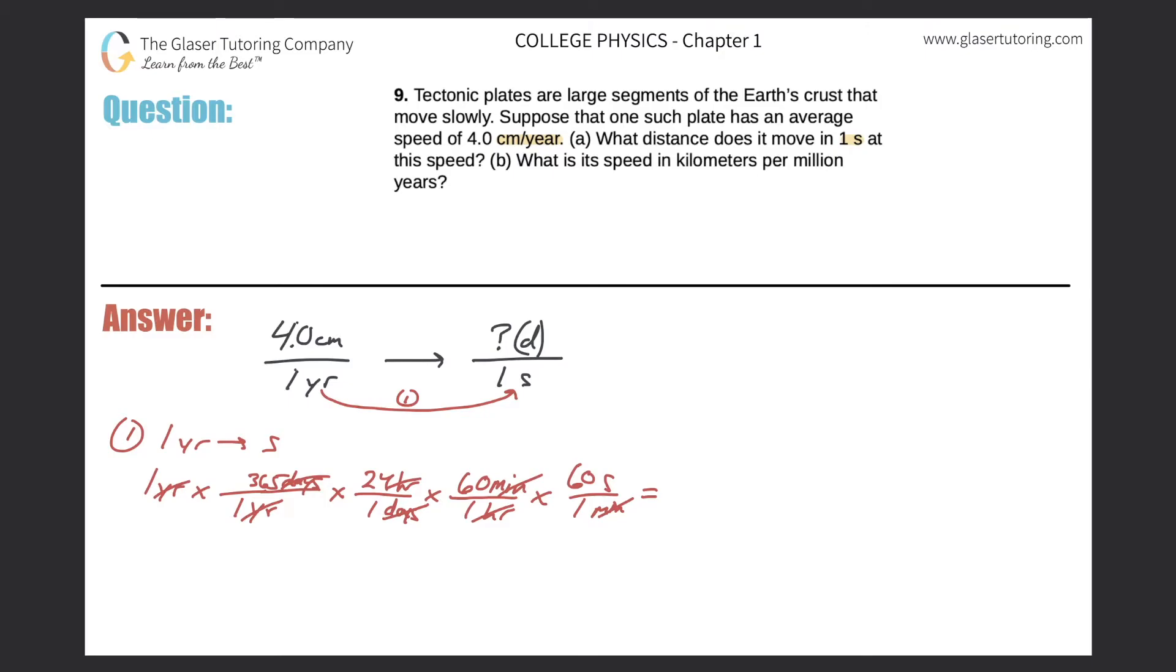And finally I can find the value. So 365 times 24 times 60 times 60 gives us a total of a whopping 3.15 times 10 raised to the 7 seconds. Okay, so that's how many seconds there are in a year.